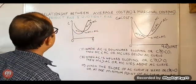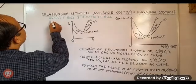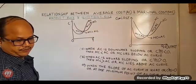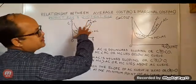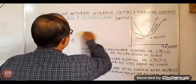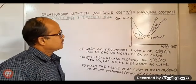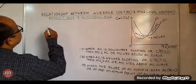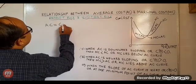This is the relationship between the marginal cost curve and the average cost curve. Now we explain this relationship with the help of the product rule of differentiation as well as the quotient rule of differentiation. Let us take average cost as a function of output — we consider average cost, C(Q), as a function of output.